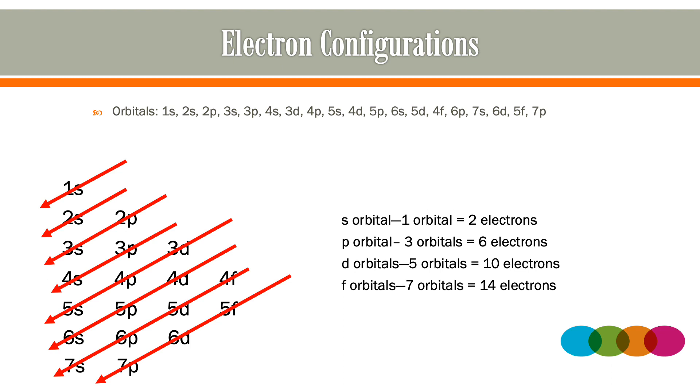You'll also notice I've only written the 7s, 7p orbitals, 6s, 6p, and 6d orbitals, and only 4 and 5 have f orbitals. This is because of the periodic table.